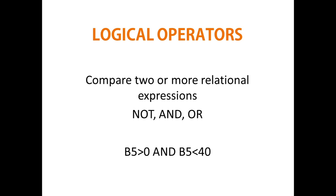If the value in B5 were 100, the first condition — 100 greater than 0 — is true, but the second condition — 100 less than 40 — is false, so the entire expression becomes false. Those were the three types of operators in Excel.